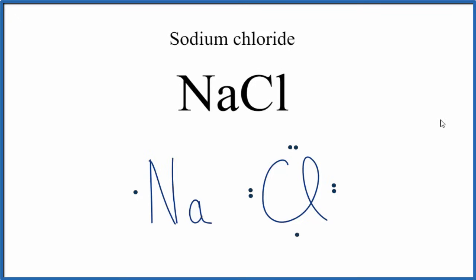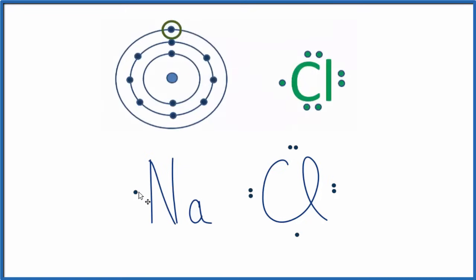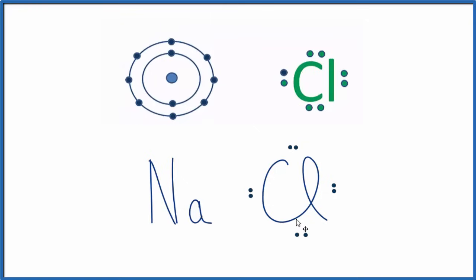In ionic compounds, the metal will transfer its valence electrons to the nonmetal. We have the one valence electron here, and we'll transfer that to the chlorine. The chlorine now has eight valence electrons, a full outer shell called an octet, which is very stable.